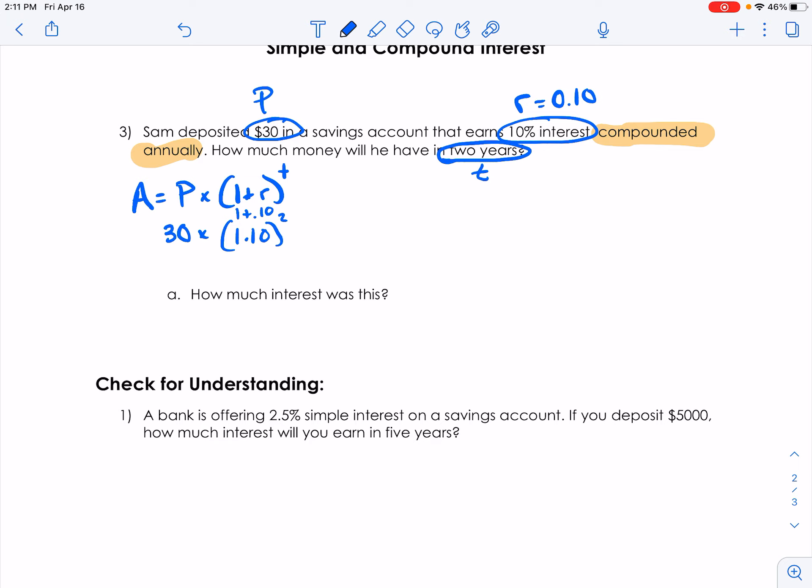Since we have an exponent, we have to do 1.10 times 1.10. And so we get 1.21 times 30.